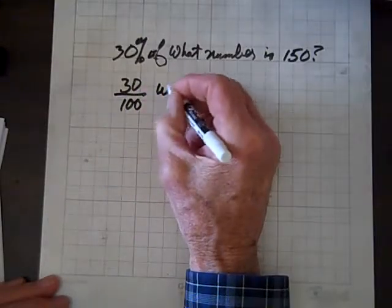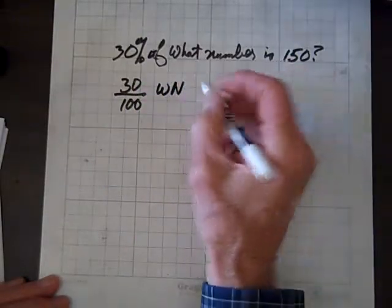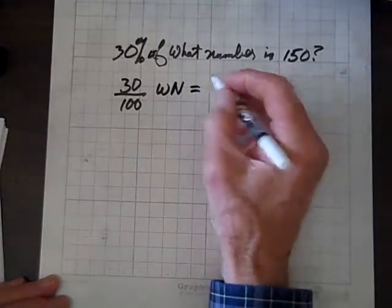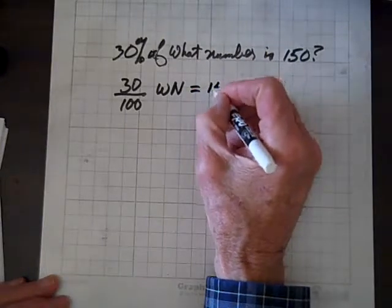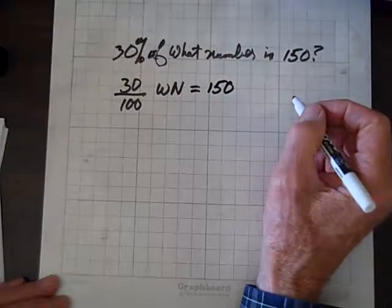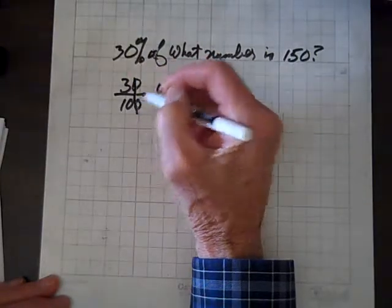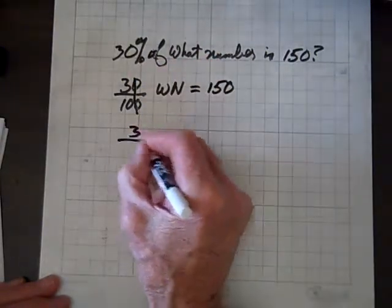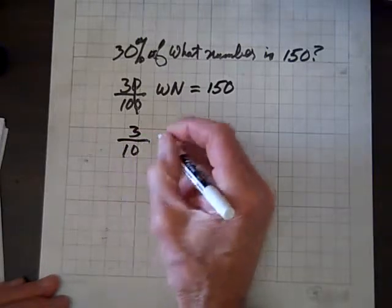and times what number? Equals, is, means equals, 150. And now, look, one of these zeros divides out, so at least we've made it a little more manageable,